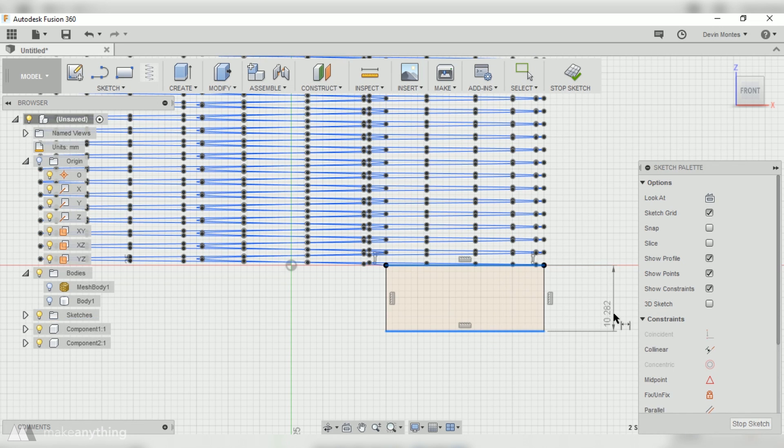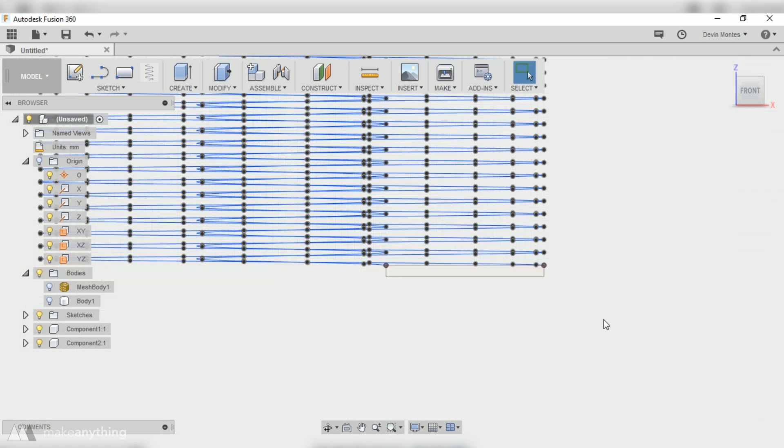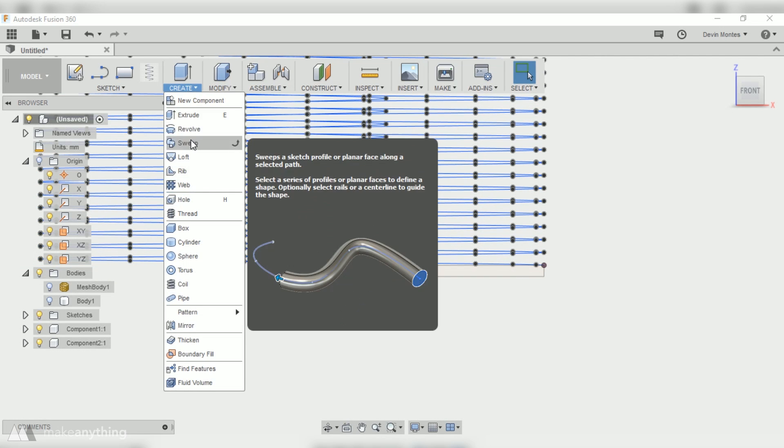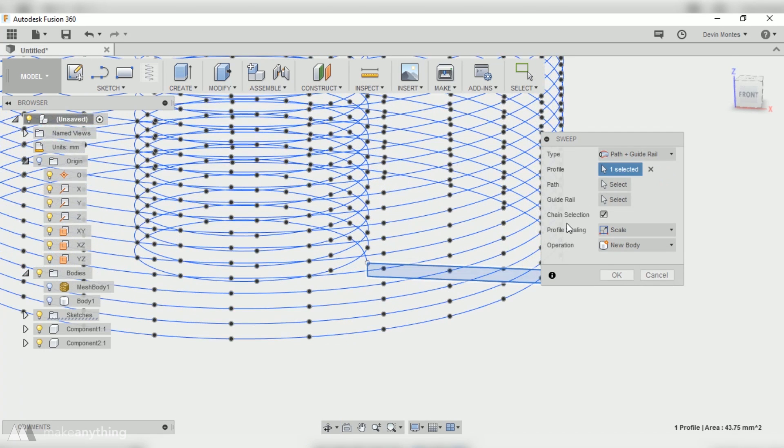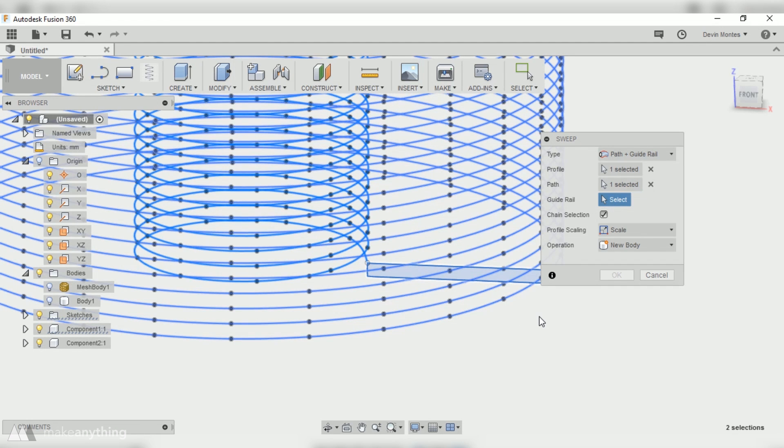I'll go to Sweep, make sure that's got a path and a guide rail, and then select the inner helix as the path and the outer as the guide rail. Fusion will chug along and make that springo.